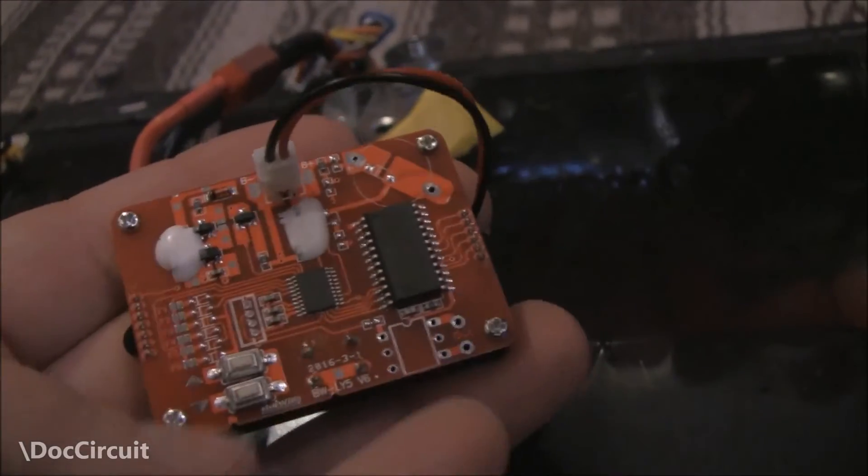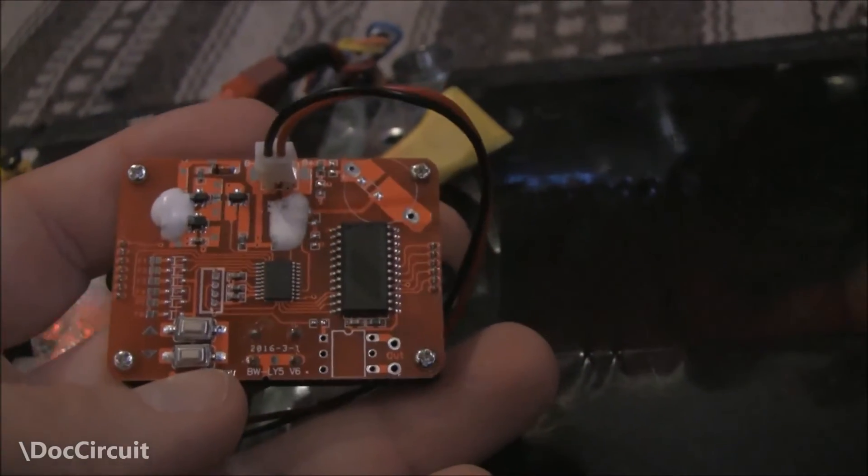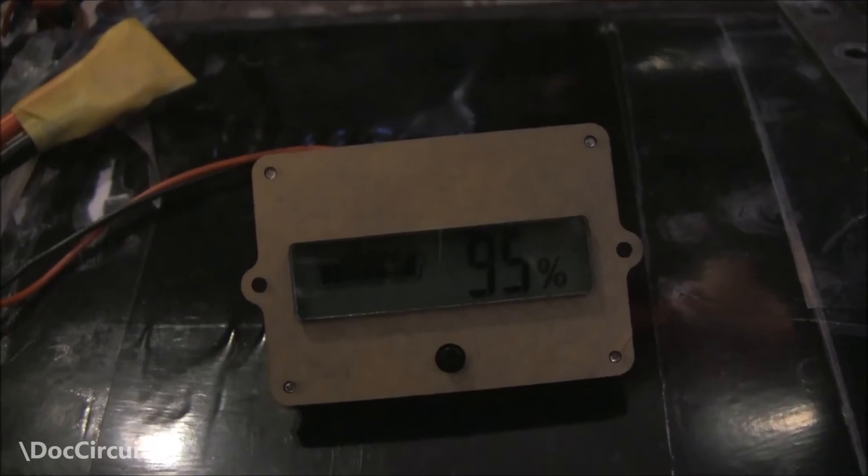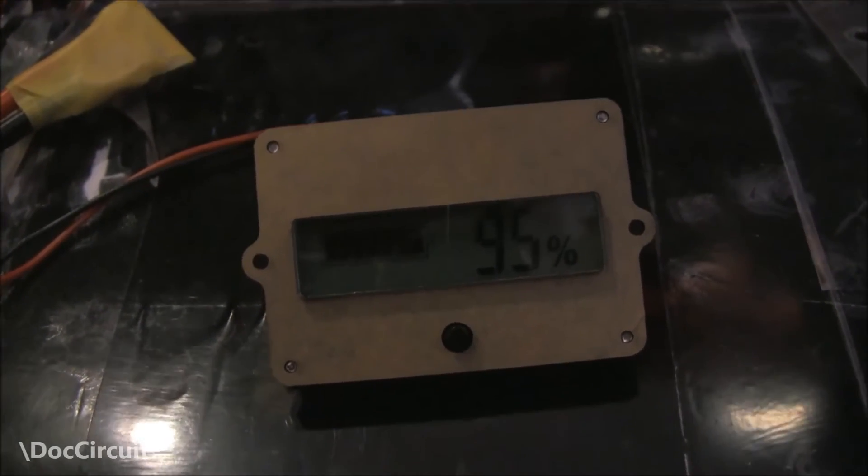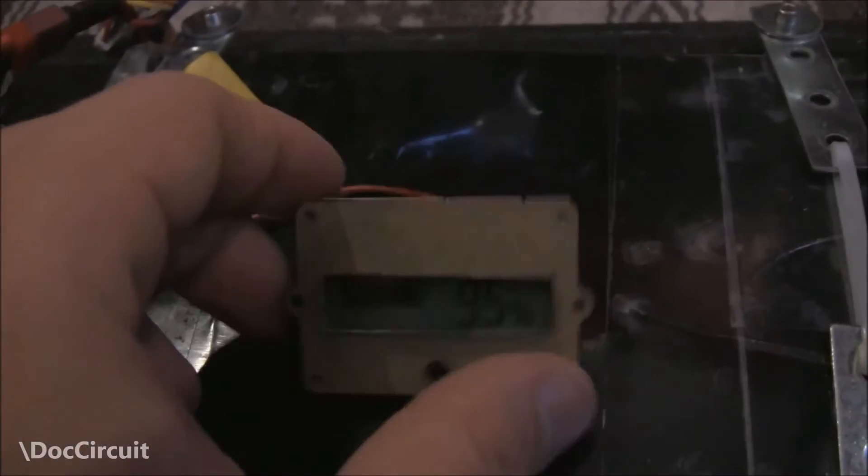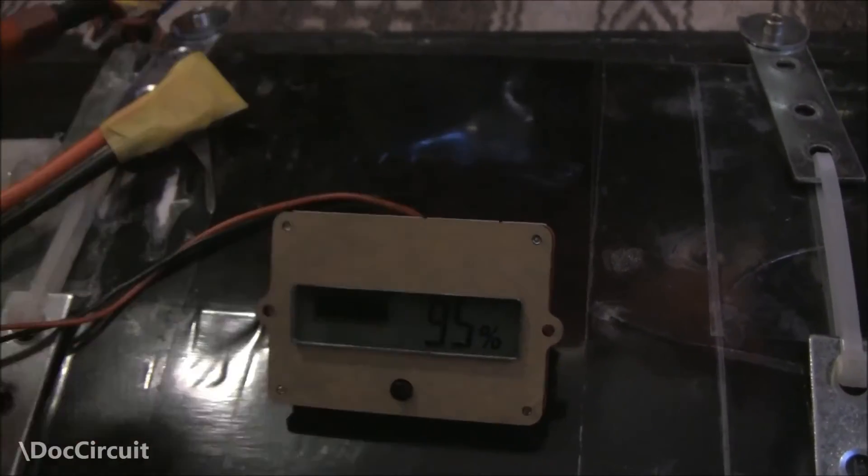On the rear you have two switches. You see them there, up and down for scrolling through options. To program it, you hold down the down button, then power it up. I just disconnected that, held the down button at the rear, then reconnected it.